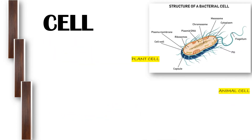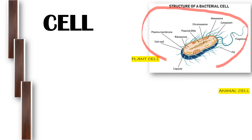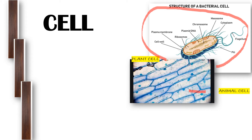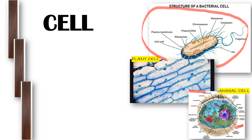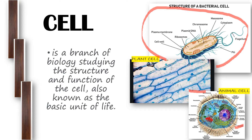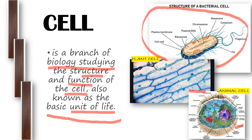Next we have the cell. We have examples of a bacterial cell, a plant cell, and an animal cell. The cell is the basic unit of life — it is a branch of biology studying the structure and function of the cell. When we say basic unit of life, it means our life starts from the cell. Without the cell, we can't survive — there would be no human beings, no microorganisms, and no forms of living things. That is why the cell is considered the basic unit of life.